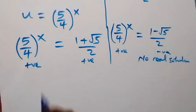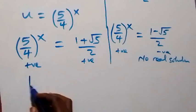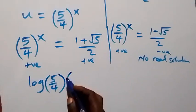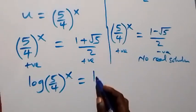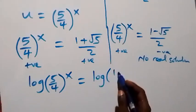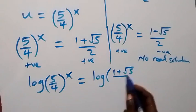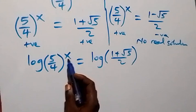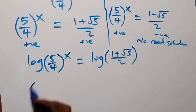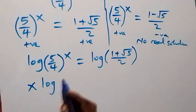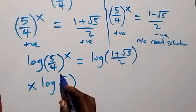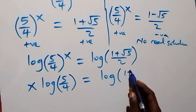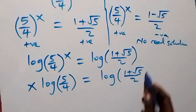From the valid case, we take the log of both sides: log of (5/4) raised to power x equals log of (1 + √5)/2. Bringing the exponent down, we have x times log(5/4) equals log((1 + √5)/2).